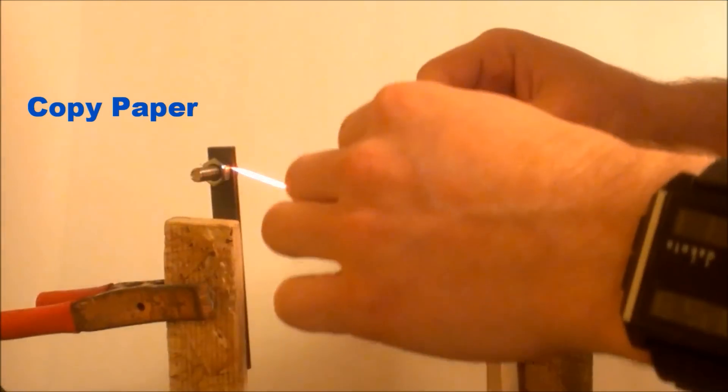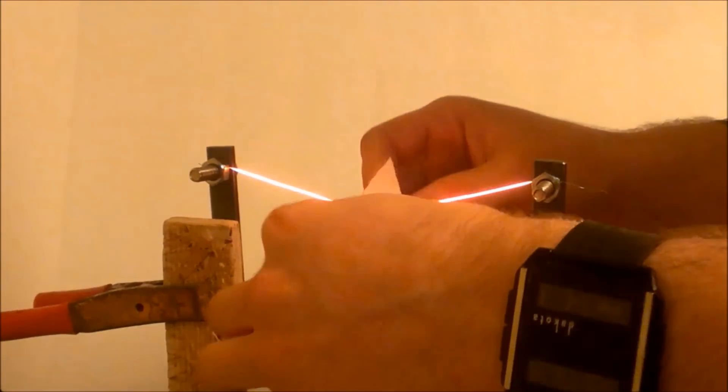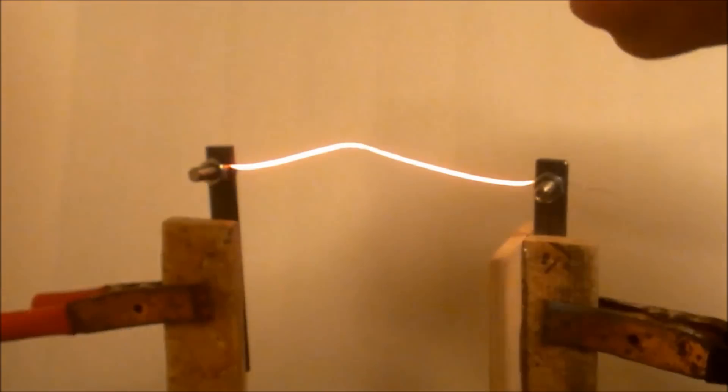The motivation for this project was to cut different materials in the same way a laser cutter does, by vaporizing a very small amount of material at a time. A nichrome wire is able to get hot enough to do just that.